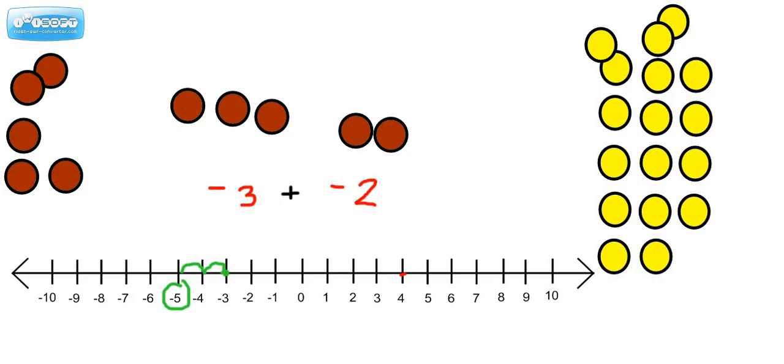Now when you learn about subtracting integers, you're going to learn that this is the same thing as a negative 3 minus 2. So there's two ways to say go left on the number line. You could say we're adding a negative number, or you could just say minus 2.